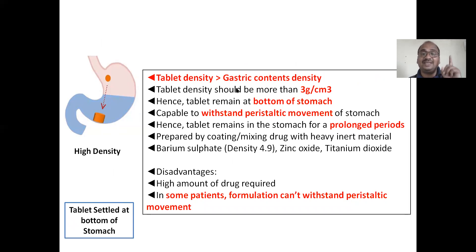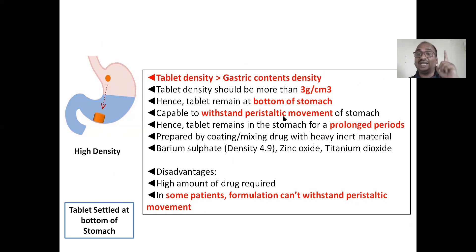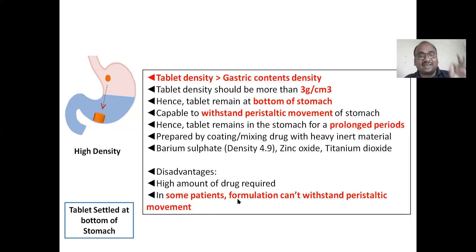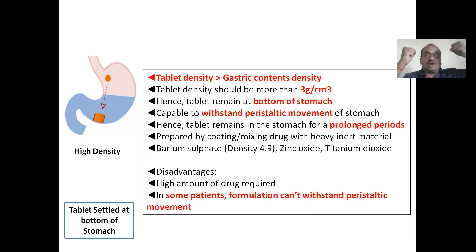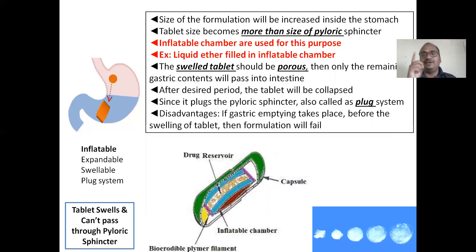High density system: tablet density must be greater than gastric content density — at least 3 grams per centimeter cube. The tablet remains at the bottom of the stomach and withstands peristaltic movements for a prolonged period. High density excipients used include barium sulfate with density 4.95, zinc oxide, and titanium oxide. Disadvantage: in some patients with very strong peristaltic movement, the formulation may fail.